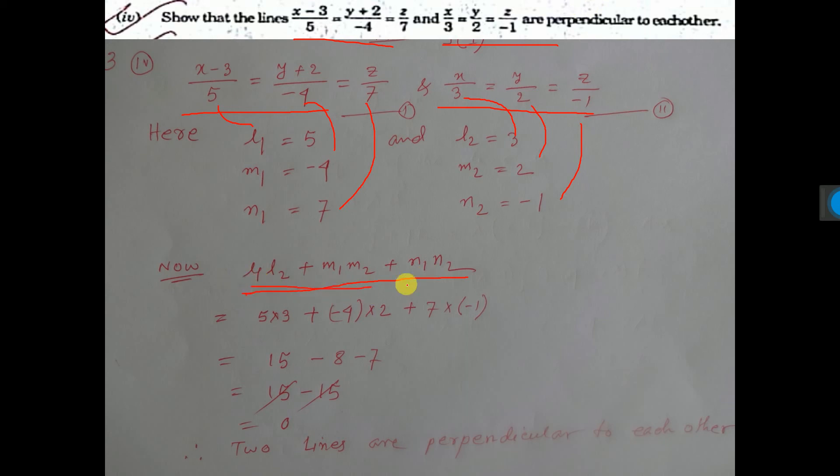Now, find this value, it is coming 0. Now, there is one formula, if this thing equal to 0, then these two equations will be perpendicular to each other. That's all.